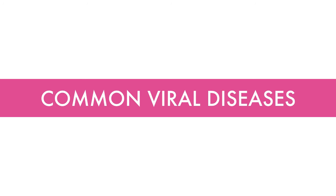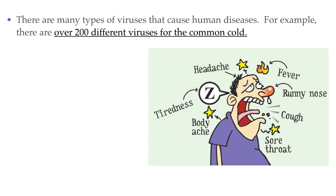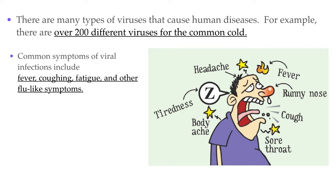Now that we know how viruses replicate in our body cells, let's talk about some diseases they can cause. The number of viruses that can cause viral diseases is huge — for example, well over 200 different virus strains are implicated in causing the common cold, and that's just a single disease. You may have noticed that whenever you get sick, no matter the cause, you tend to suffer from common symptoms like fever, coughing, fatigue, and other symptoms we often refer to as flu-like symptoms.